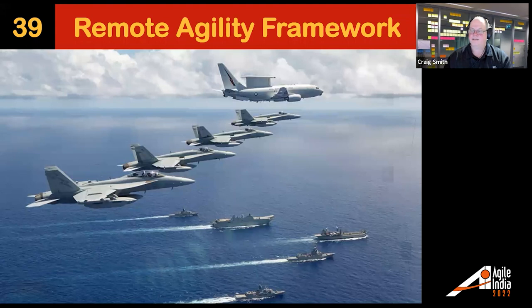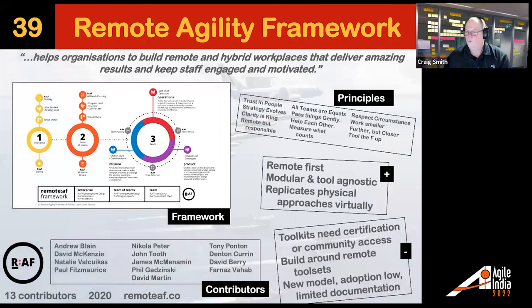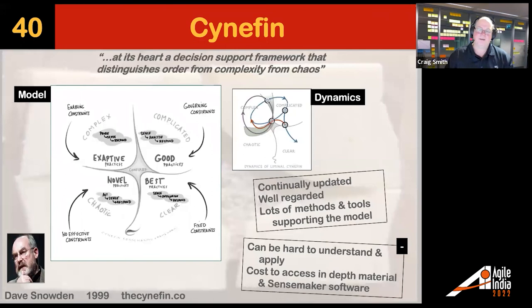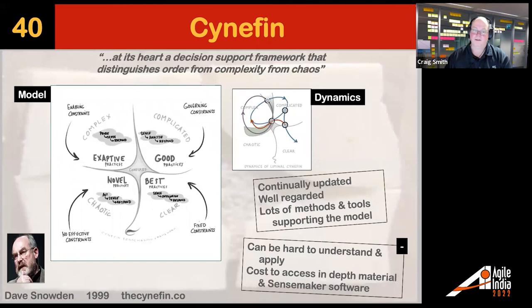We're all doing things remotely these days. In the last couple of years, the Remote Agility Framework came out in 2020. While you need certification or community access to get into it fully, it's an interesting look at how we do things remote-first — taking what we used to do in the real world and bringing it out. And lastly, number 40: Cynefin — making sense of our world. It was updated in 2020 with some different names. How can we make sense of the world we're in? That's extremely important when making sense of our Agile world.